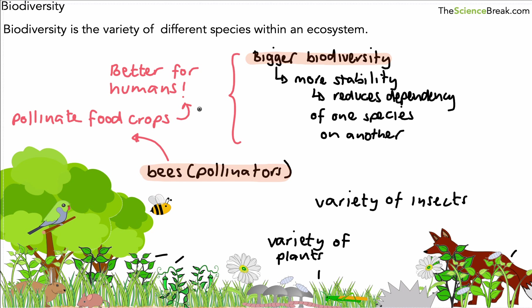So there we go — the meaning of food chains, food webs, why food webs are so important, and why biodiversity — the variety of different species within an ecosystem — is so important. The bigger the biodiversity, the more stability, because it reduces the dependency of one species on just one other species. Each species is dependent on a whole range of others, so they are more likely to survive when we have bigger biodiversity. If you downloaded the work-along sheet, you could have put these notes on that sheet. Thanks very much, and I'll see you soon.